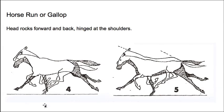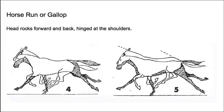When a horse gallops, the head kind of rocks forward and back. It's hinged at the shoulders, so you don't want it moving too much in the Z translation or even in the Y translation. It's really a rocking motion in the Z rotation, hinged at the shoulders.